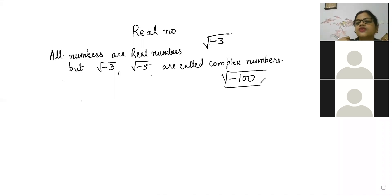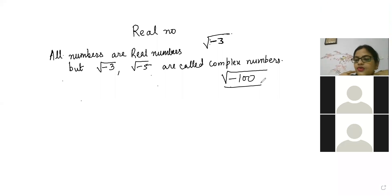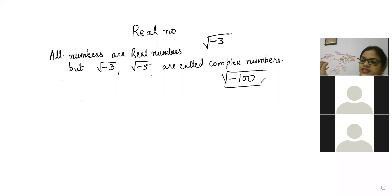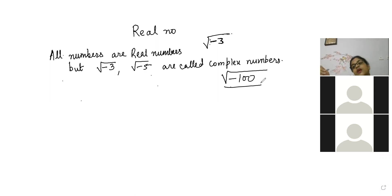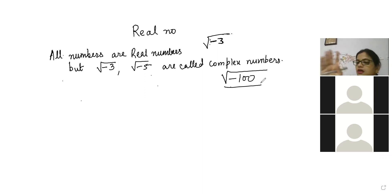Root under minus hundred — Keshav and Krishna say it is a complex number. Whenever inside a root there is any negative, that will not be defined in real numbers. We are converting it as a complex number. It is defined, but it comes under the imaginary section, and that's why it is called complex.